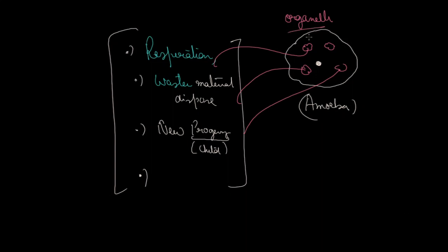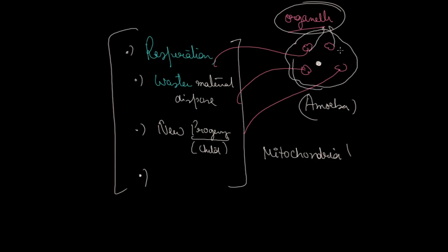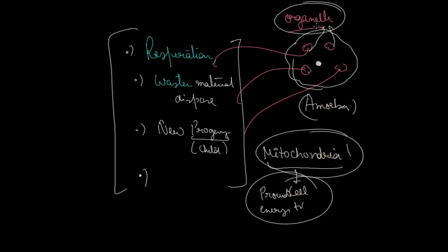For example, I will tell you the name of one cell organelle: mitochondria. Mitochondria is an important cell organelle. I will make a separate video and explain all the cell organelles and their functions. Mitochondria is a cell organelle which is inside the cell, and its work is to provide energy to the cell.